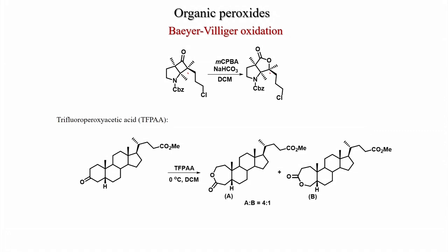Trifluoroperoxyacetic acid was used for a steroid derivative bearing both a carbonyl and an ester group. Under these conditions the ester group does not react, and only the carbonyl group reacts to give the lactone. Two products form in a 4:1 ratio — the major product arises from migration of the less hindered group, while the other group migrates slowly, possibly due to steric effects at the chiral center.